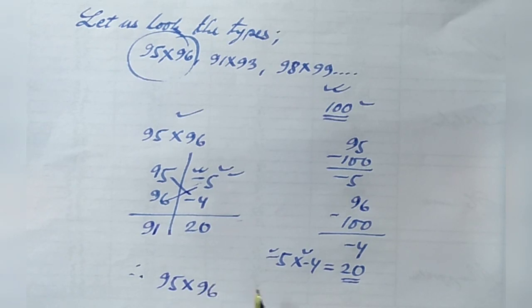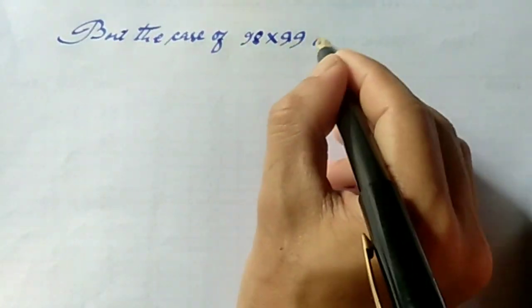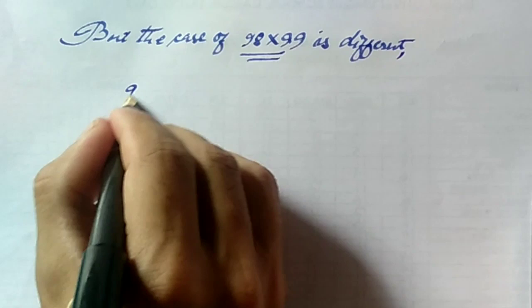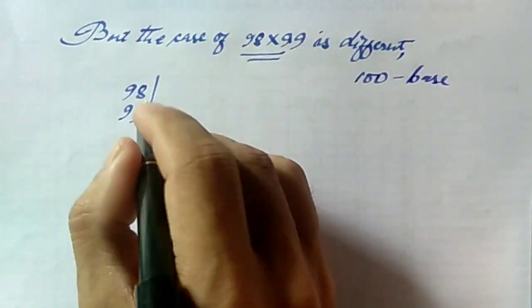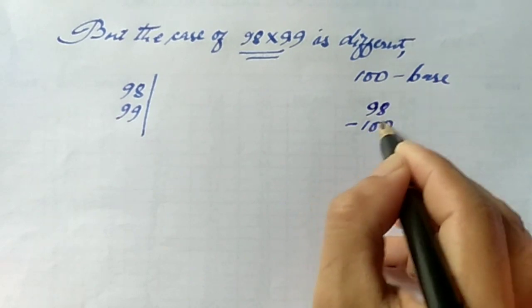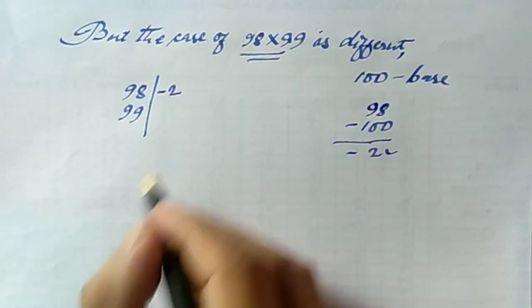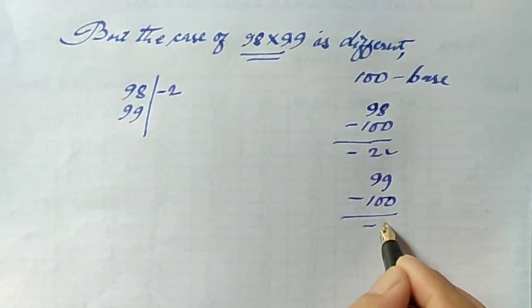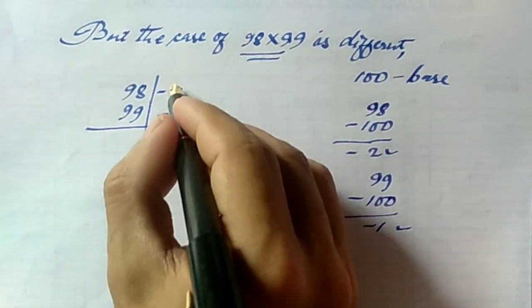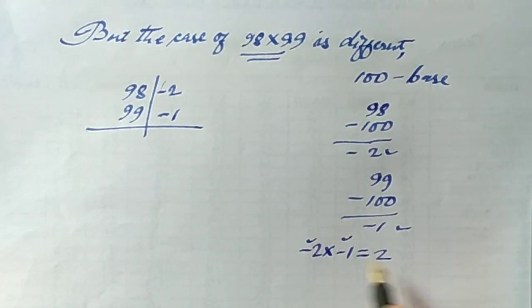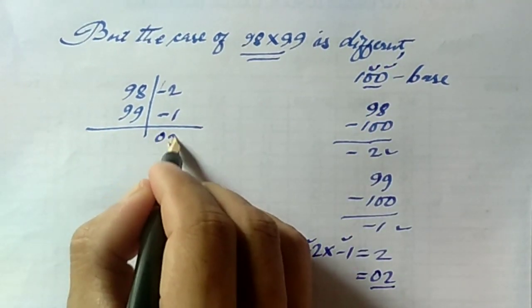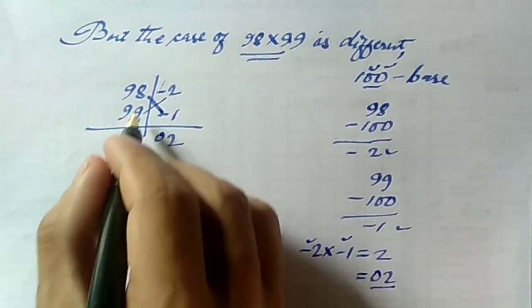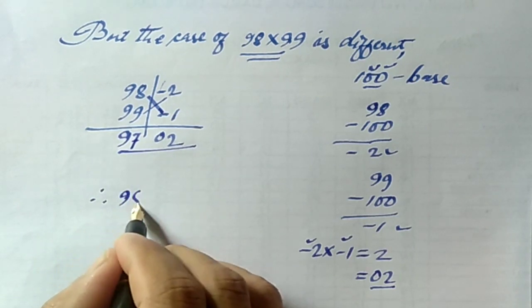But the case of 98 into 99 is different. Now 98 and 99 is near to 100, and it is the base. So 98 should be subtracted from 100, that is 100 minus 98, we get minus 2. Similarly, let us subtract 99 from 100, we get minus 1. Then let us multiply minus 2 into minus 1, we get positive 2. But this 2 is a single digit and the base is 100, so there are 2 zeros in 100, so we'll write 02 here. Similarly, let us subtract from either side: 98 minus 1 or 99 minus 2, we get 97. Therefore, the final answer of 98 into 99 gives you 9702.